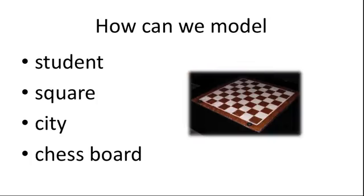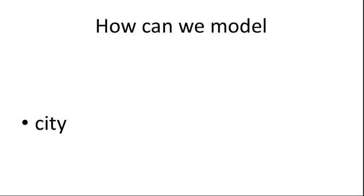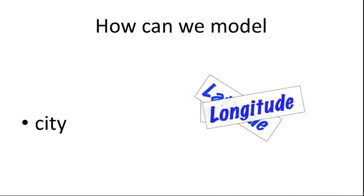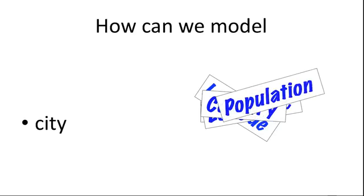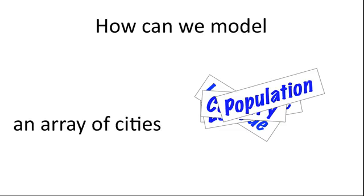That doesn't seem too difficult. Take, for example, a city. We could create string variables and doubles to represent the name, latitude, longitude, country, and population. Five variables could represent a single city. But what if we need to represent several cities or an array of cities?